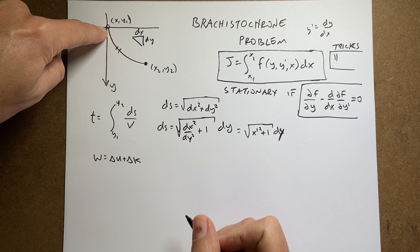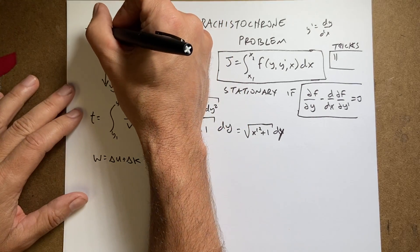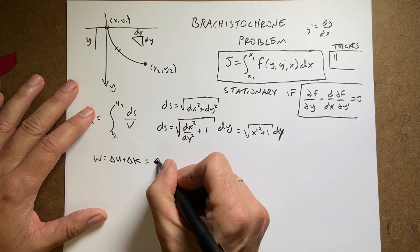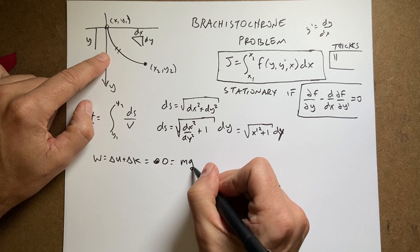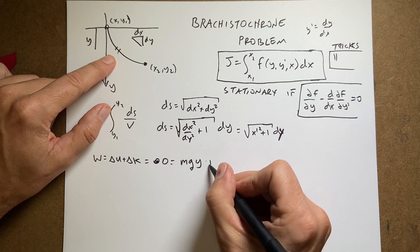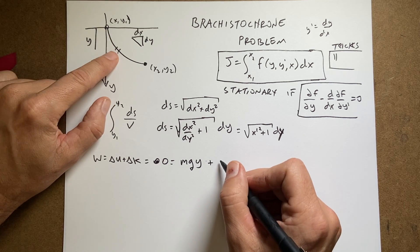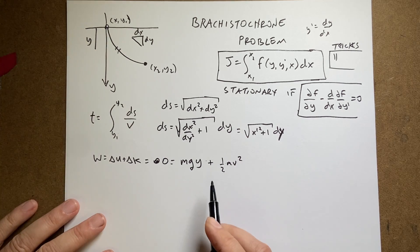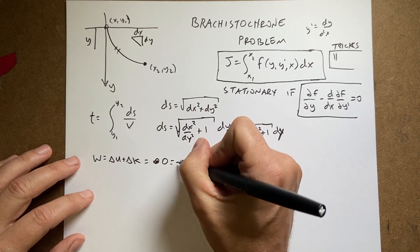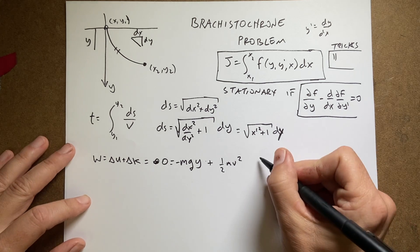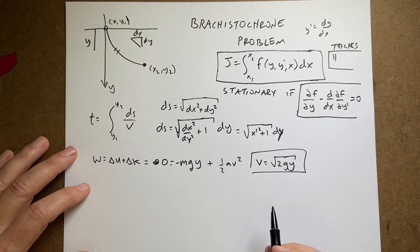For the velocity, I can use work-energy. If I start at rest and include the earth and the bead in my system, there's no work done, and the change in potential equals the change in kinetic energy. So: zero equals the final potential mgy minus initial (which is zero), plus the final kinetic energy one-half mv². The potential has to be negative mgy since y is positive downward. Solving for v gives v equals the square root of 2gy.